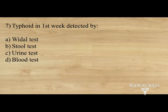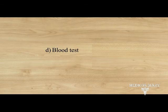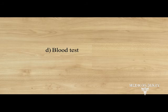Typhoid in the first week is detected by: option A. Widal test, B. stool test, C. urine test, D. blood test. Answer: option D, blood test. In the first week of typhoid: blood culture. Second week: agglutination test or Widal test. Third week: stool culture. Fourth week: urine culture. You can remember this using the code BASU — B: blood culture, A: agglutination test, S: stool culture, U: urine culture.